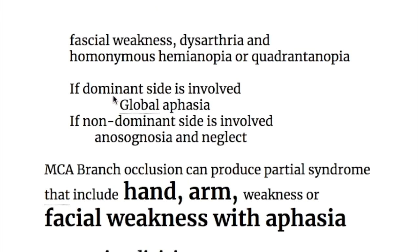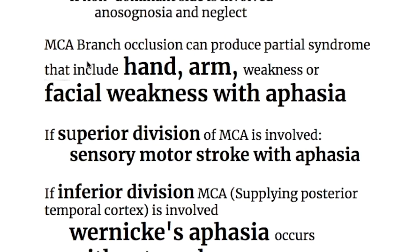If the dominant side is involved due to middle cerebral artery occlusion, it causes global aphasia. If the non-dominant side is involved, it causes anosognosia and neglect. Middle cerebral artery branch occlusion causes a partial syndrome that includes hand and arm weakness or facial weakness with aphasia.